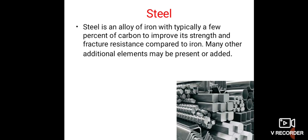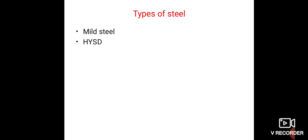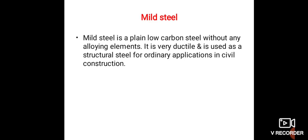अब students, बात करते हैं types of steel की। Mild steel है, जो low carbon steel होता है without any alloying element। यह बहुत ductile होता है और इसे civil construction application में ordinary structure steel के रूप में use किया जाता है।